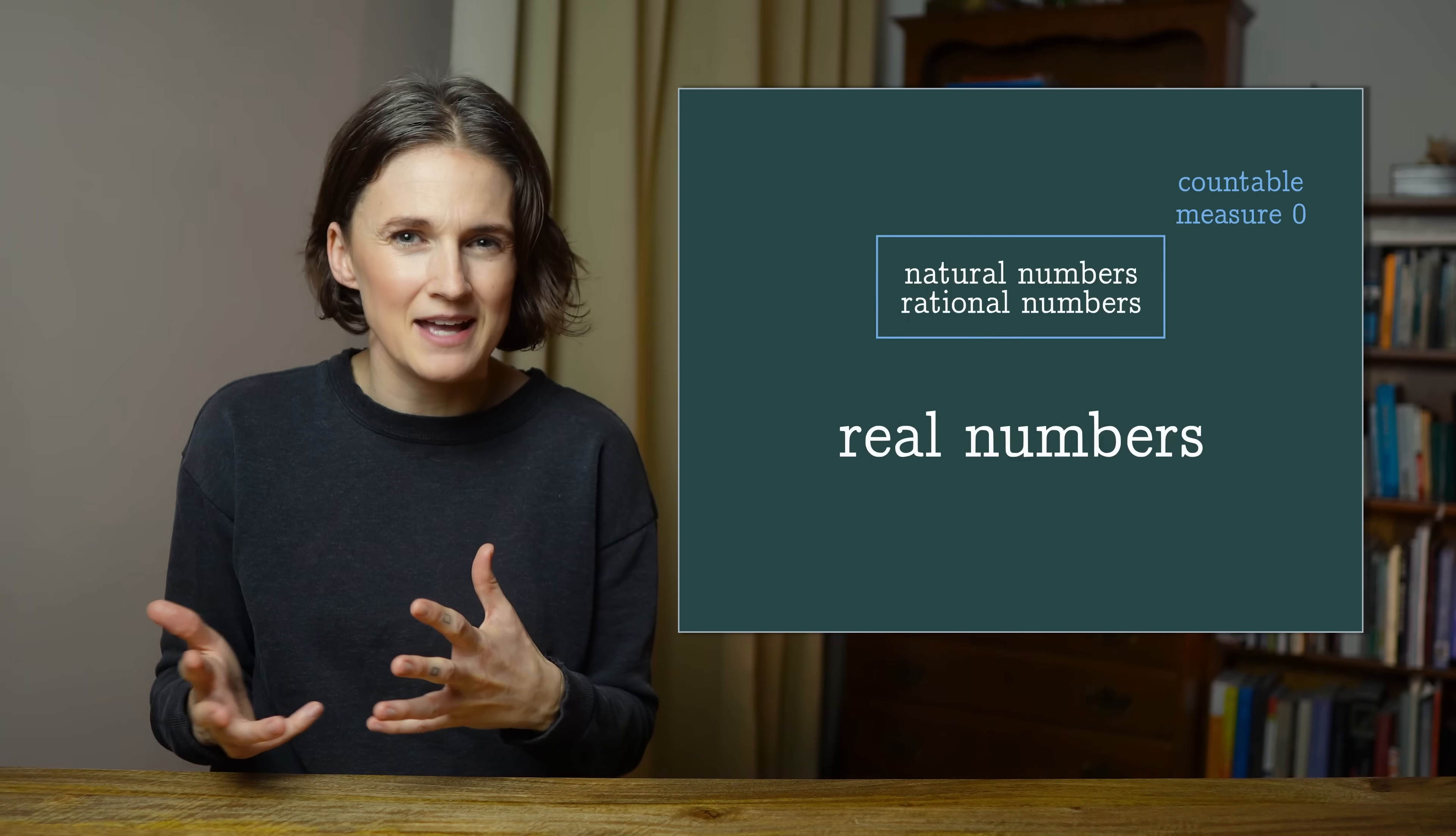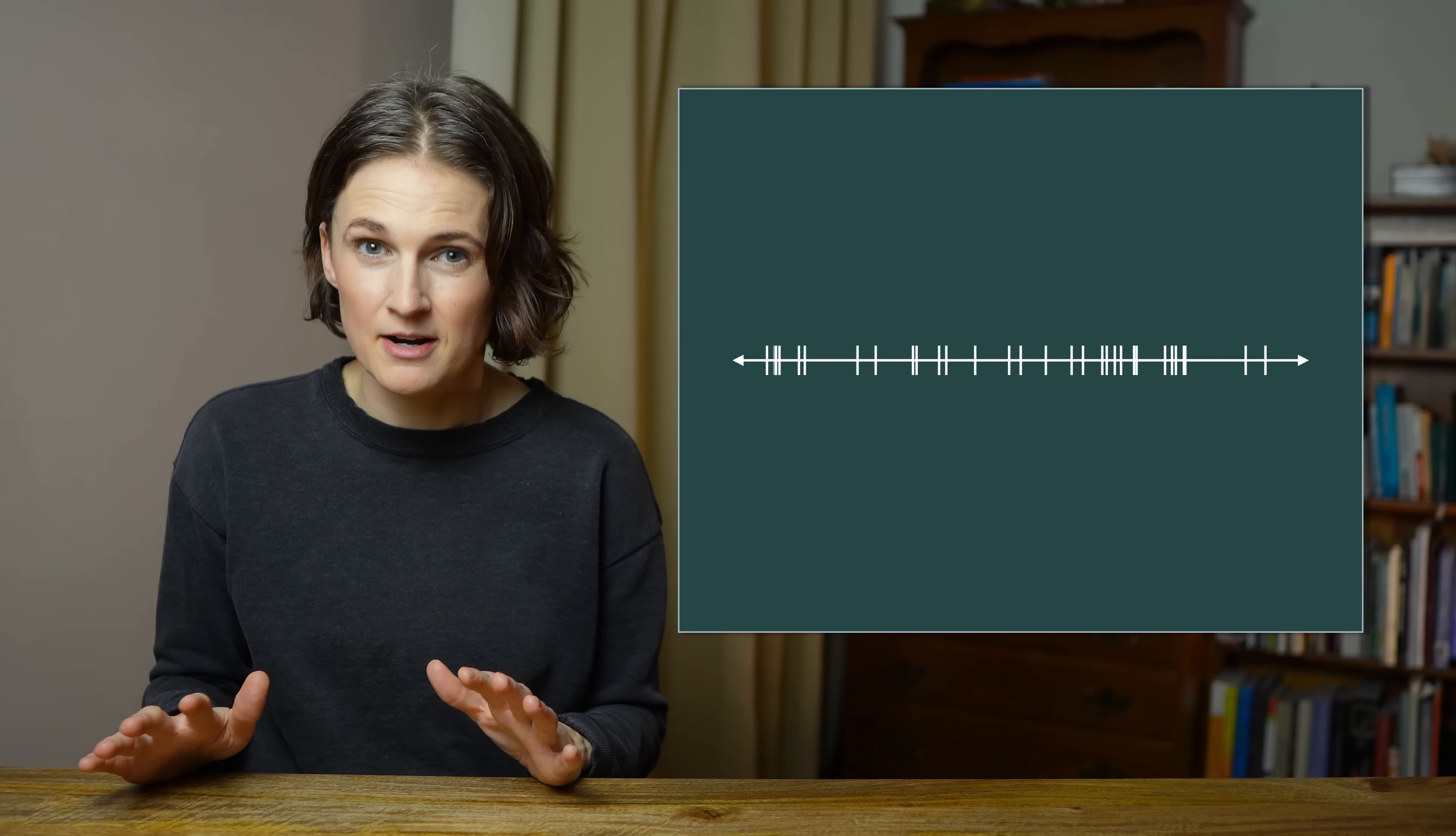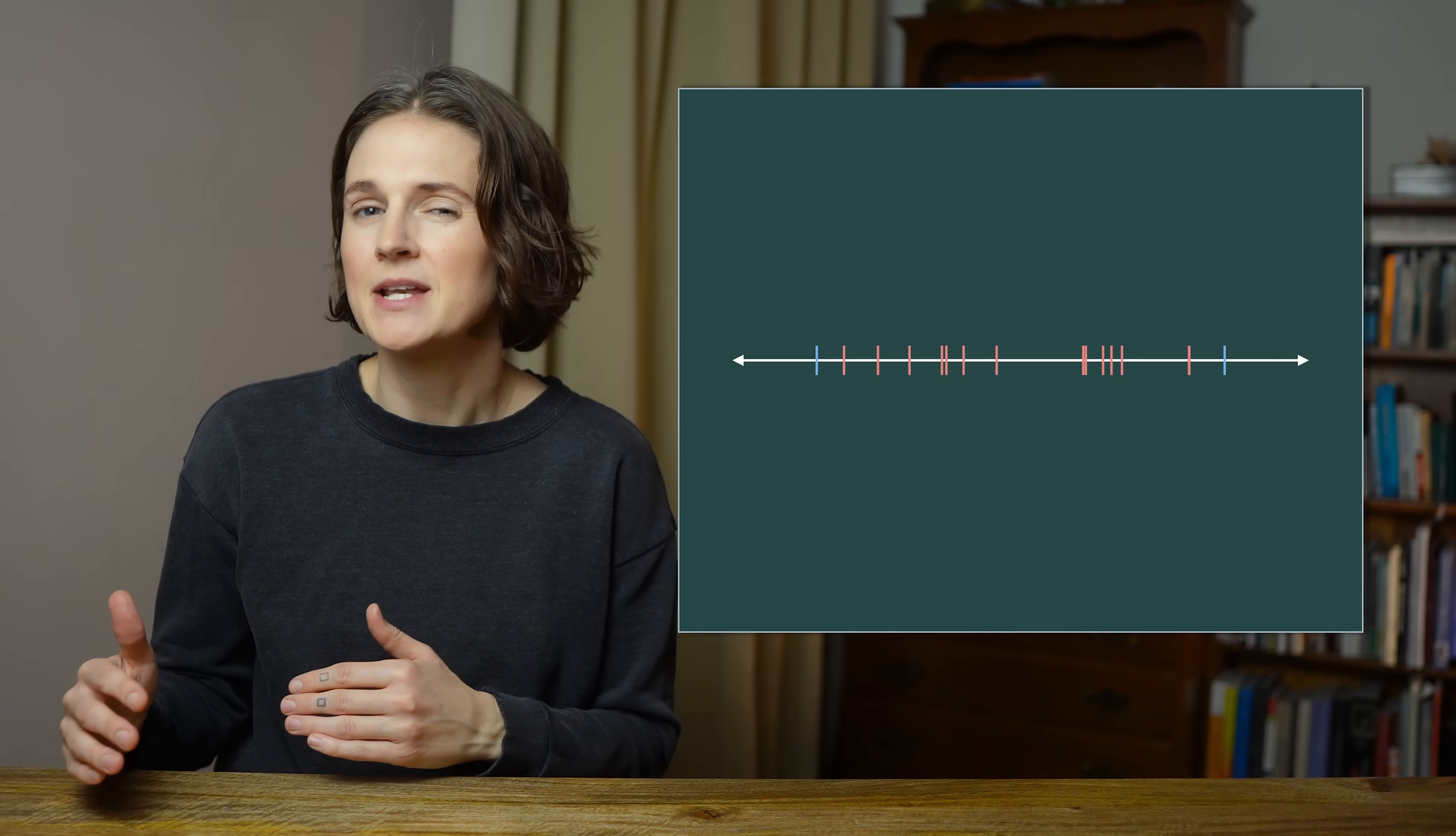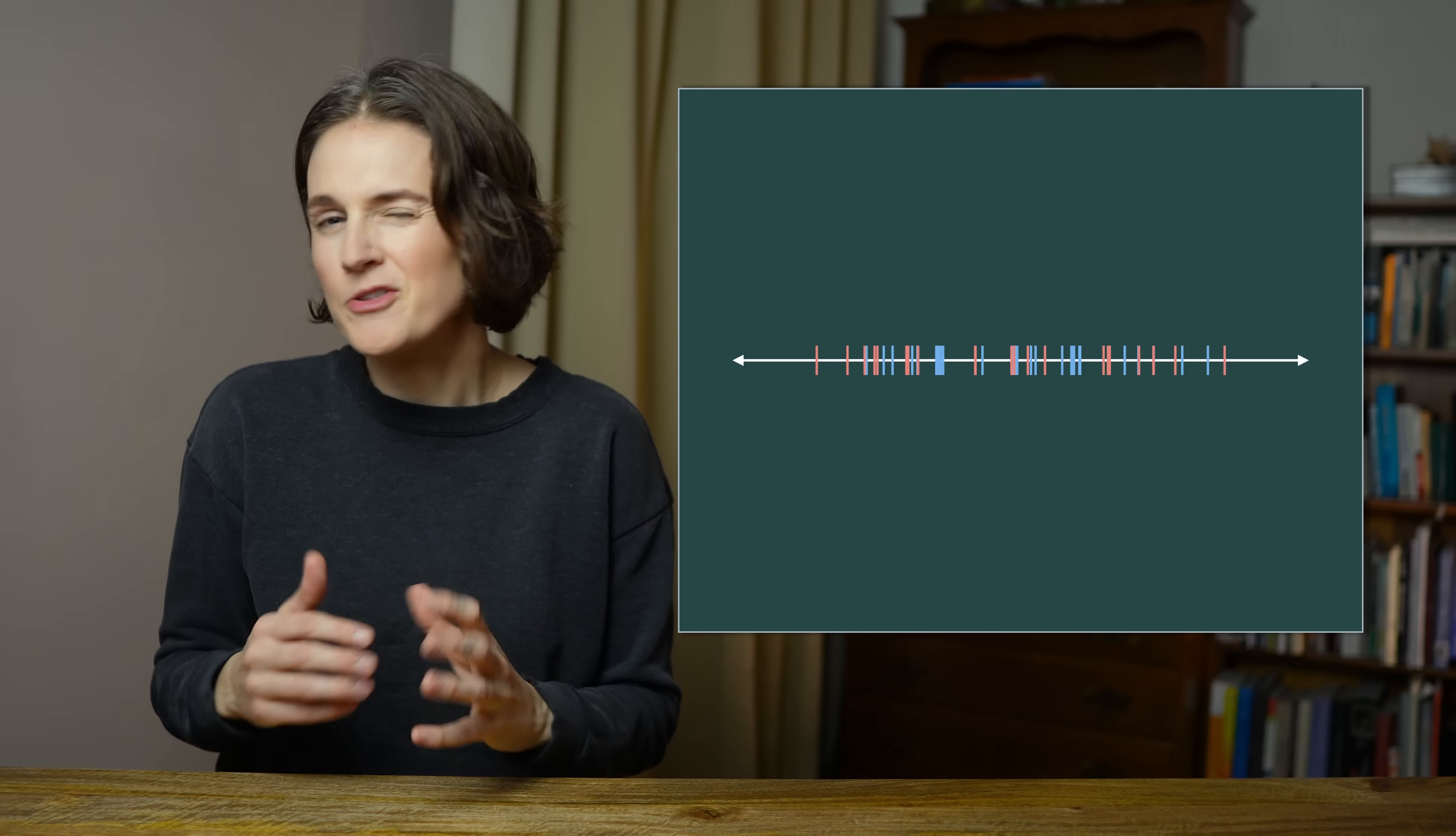With the natural numbers, that kind of feels okay. They're spaced apart along the number line. But with the rational numbers, that feels much stranger, because they're also everywhere. Between any two rational numbers, there are infinitely many irrational numbers. And between any two irrational numbers, there are infinitely many rational numbers. It's actually quite difficult for me to figure out how to illustrate this part, because all the pictures are caricatures. No matter how far you zoom in, the rational numbers and the irrational numbers are interleaved to form the number line. But amazingly, the irrational numbers make up 100% of the number line, and the rational numbers are 0%.